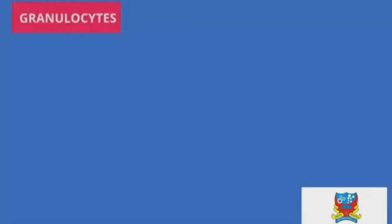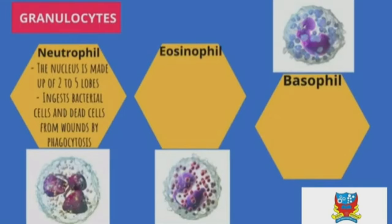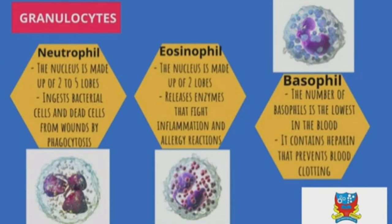Granulocytes are divided into three types: neutrophils, eosinophils, and basophils. Neutrophils have a nucleus made up of two to five lobes and ingest bacterial cells and dead cells from wounds by phagocytosis. Eosinophils have a two-lobed nucleus and release enzymes that fight inflammation and allergy reactions. Basophils are the least numerous in the blood and contain heparin that prevents blood clotting.